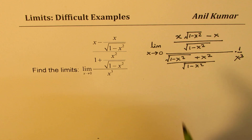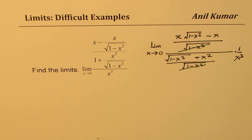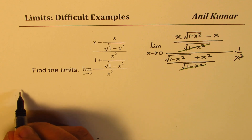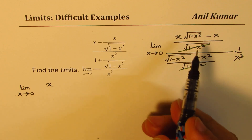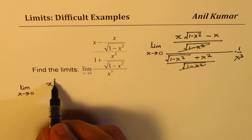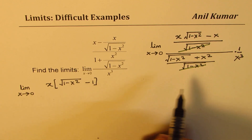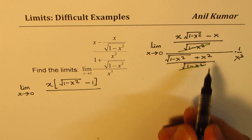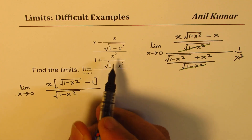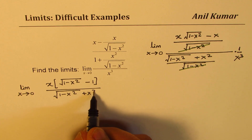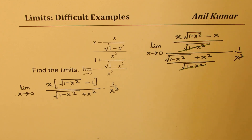Now let's cancel things out. The square root of 1 minus x squared cancels, giving us a much simpler expression to work with. We write this as the limit as x approaches 0. In the numerator, we take x common and get x times the quantity square root of 1 minus x squared minus 1. The denominator is square root of 1 minus x squared plus x squared, times 1 over x cubed.